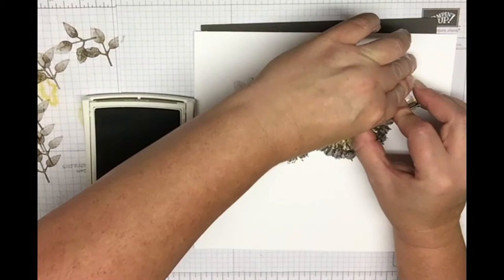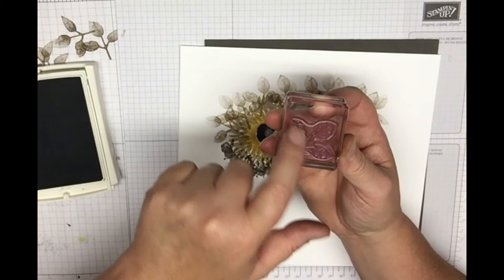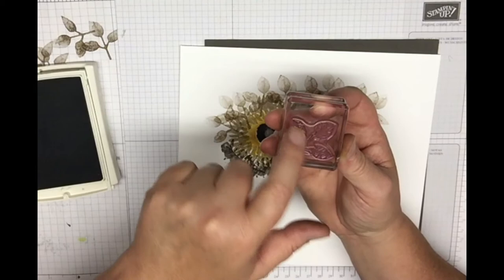The next step is the second part of that leaf, the one with the outlines of the veins of your leaves. I'm using Smoky Slate and I'm just going to do the same thing I just did.